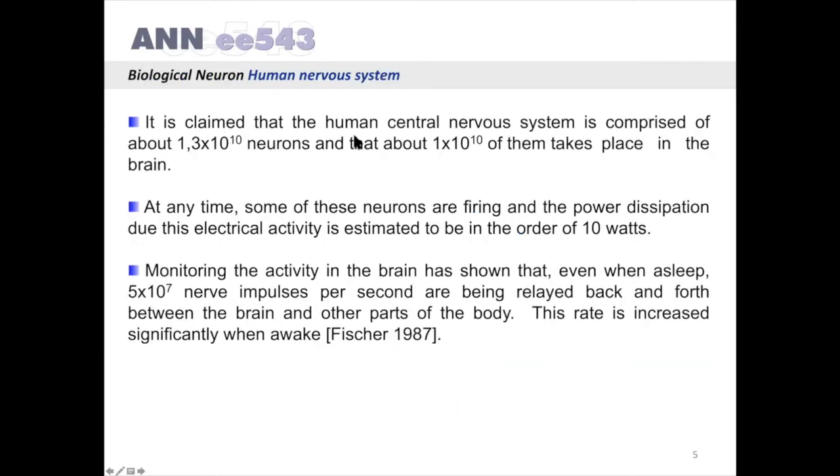It is claimed that the human central nervous system is comprised of about 1.3 times 10 to the power 10 neurons, and that about 1 times 10 to the power 10 of them takes place in the brain.